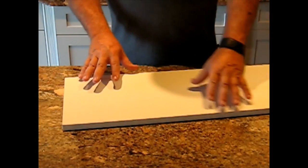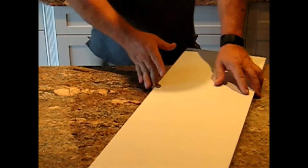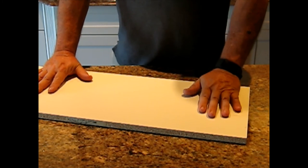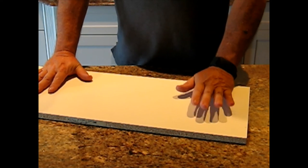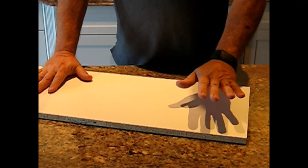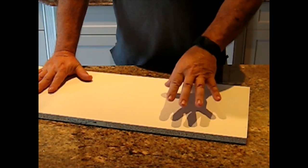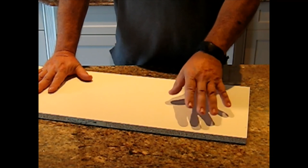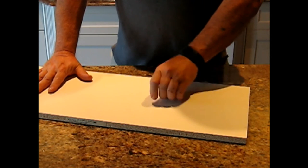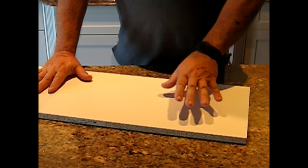Here we have an example of a typical particle board white melamine product. This is probably the most common product used in cabinets today. The pros with something like this is that the melamine surface, which is essentially just a very thin plastic laminate, is quite durable, quite resistant to scratches, and stands up very well.